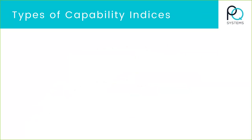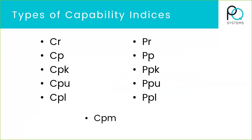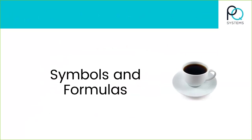In terms of capability analysis, there are a few different indices out there: CR, CP, CPK, CPU, and so on — ones that begin with the letter C, ones that begin with the letter P, and then this kind of hybrid one, CPM. There are a lot of different indices out there. I'm not going to go through each of these in terms of formulas. I don't think that's value-added to you anyway.